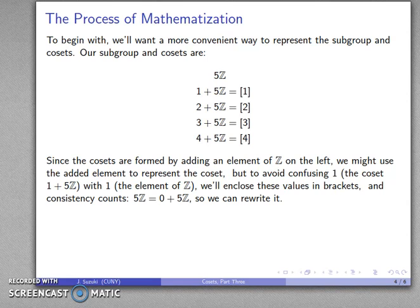Now, consistency counts. What do I do with this thing? Well, I got this thing by, well, I got everything else by something plus. What am I going to do to get 5Z? Well, I can add 0 to it, and that means the way I can represent the group itself is 0 plus, and my subgroup itself is represented by 0 in brackets.